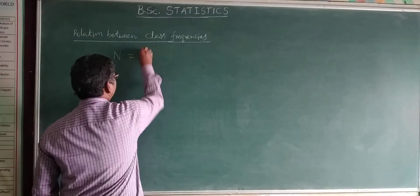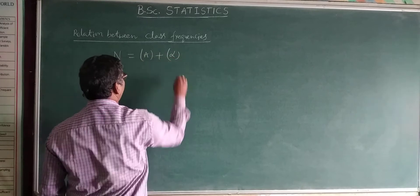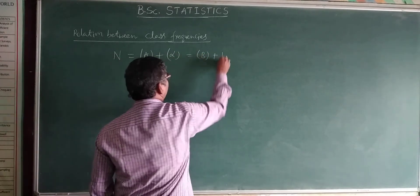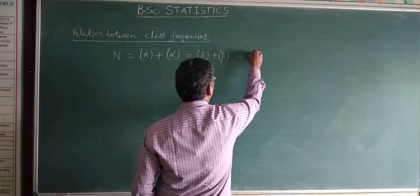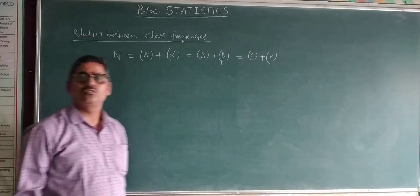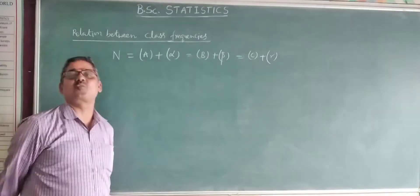So n equals 10, that is A plus alpha. Similarly, we can also write it as B plus beta. Similarly, it is C plus gamma. Like that we can write. This is the construction of formula.